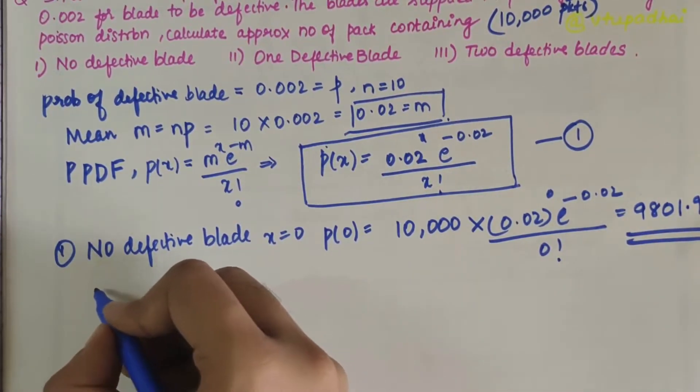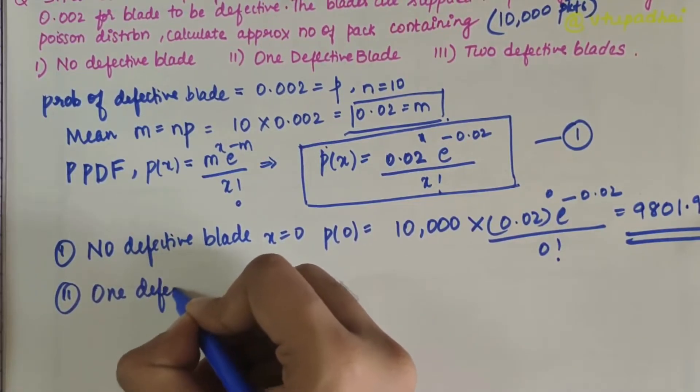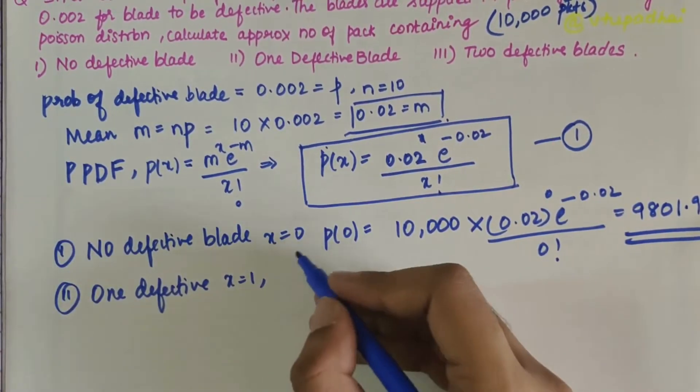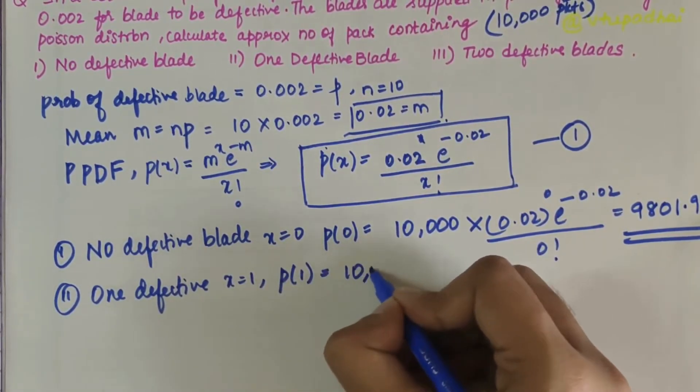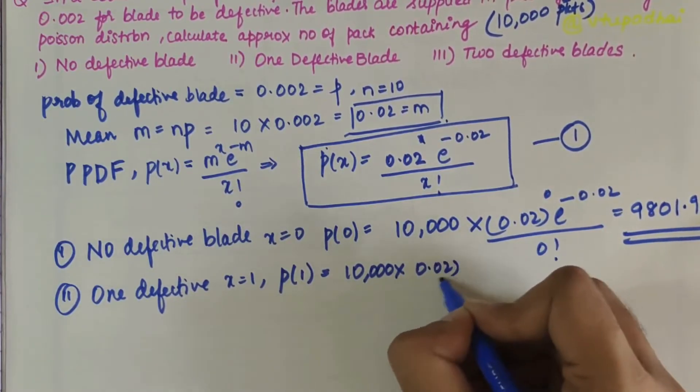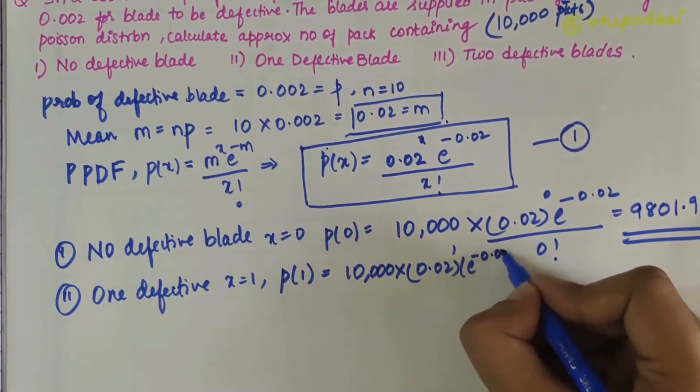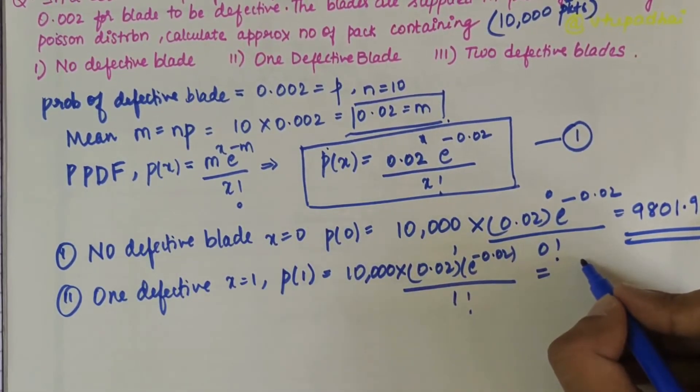Next is one defective blade, meaning X = 1. P(1) = 10,000 × (0.02^1 × e^(-0.02)) / 1!.